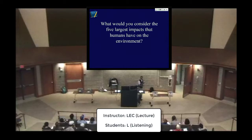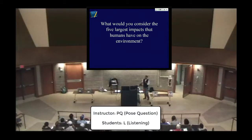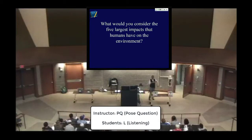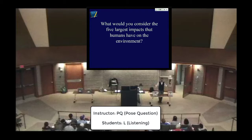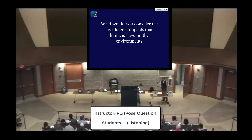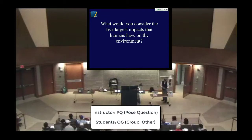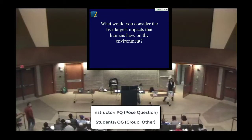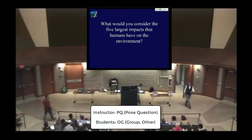Everything we're talking about today has to be considered in the light of this population trajectory of humans. So let's take a few minutes in your group — there are going to be two questions. The first one is: what would you consider the five largest impacts humans have on the environment? Think largely about the global environment — what are the five biggest impacts of any kind that humans are having? Please put your names in your blue book with the group members in attendance.